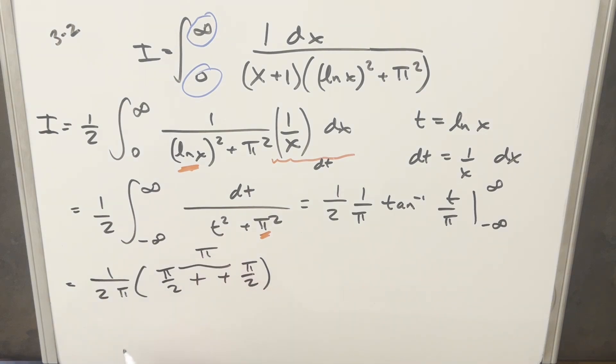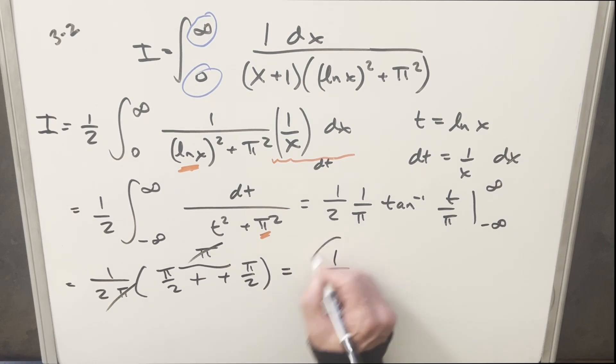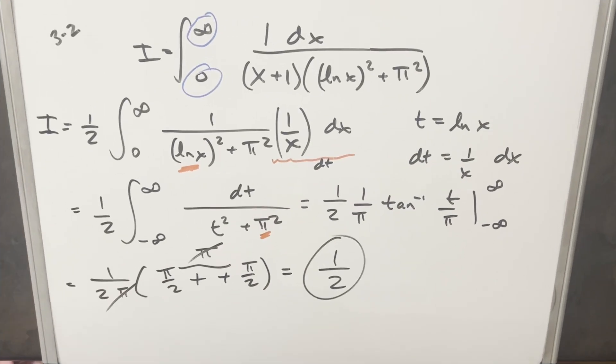But then I can just cancel this pi with this pi. And so for my final solution, we just get 1 over 2. Okay, there you have it. Good one from MIT 2024. Thanks everyone for watching. Have a good day.